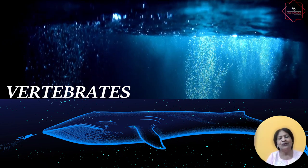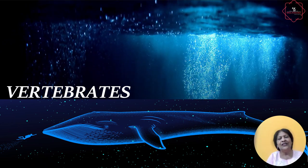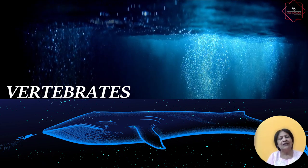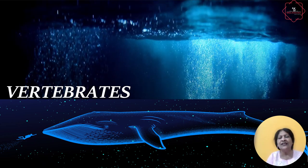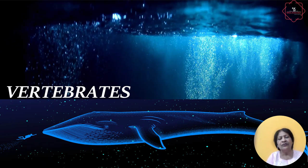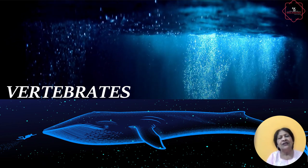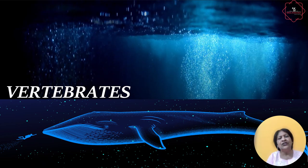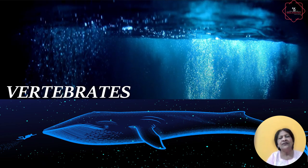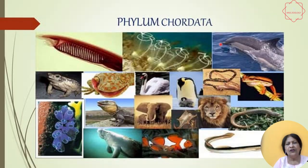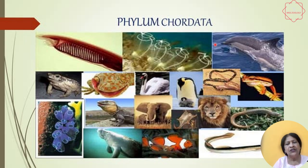Hello viewers, welcome to Missology. Today our topic is vertebrates. This is in continuation of the playlist of five kingdom classification. Under that, the fifth kingdom Animalia includes vertebrates as well as invertebrates. All vertebrates are included under the phylum Chordata. This Chordata includes a wide range of animals under different classes. Now let's see who these animals are.